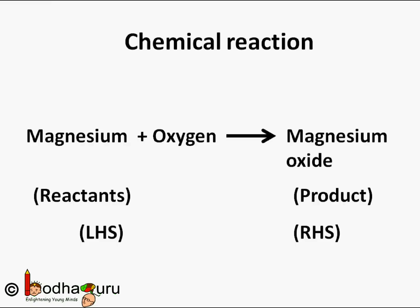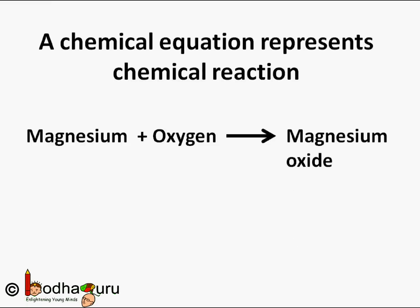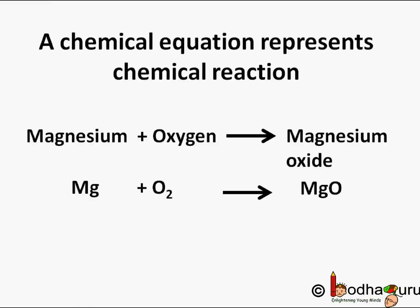Here, the chemical reaction was written as a word equation. So, let us now write it in a more concise format. We already know the chemical formula for magnesium is Mg. Oxygen is represented as O2, where 2 is written in a subscript. This is because a molecule of oxygen contains two atoms, right? And magnesium oxide is represented as MgO. So, the chemical equation can be represented as Mg plus O2 gives MgO.